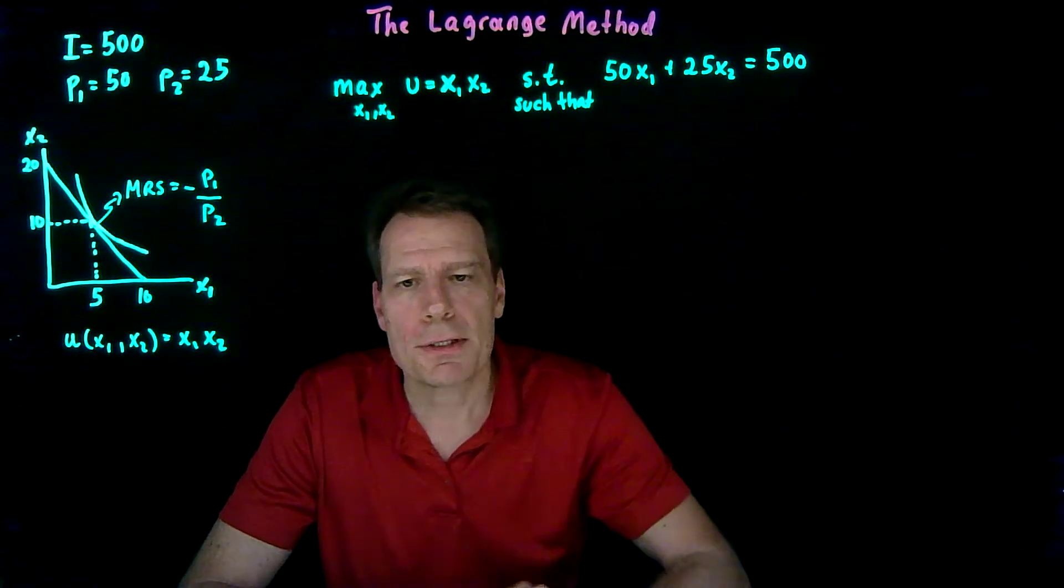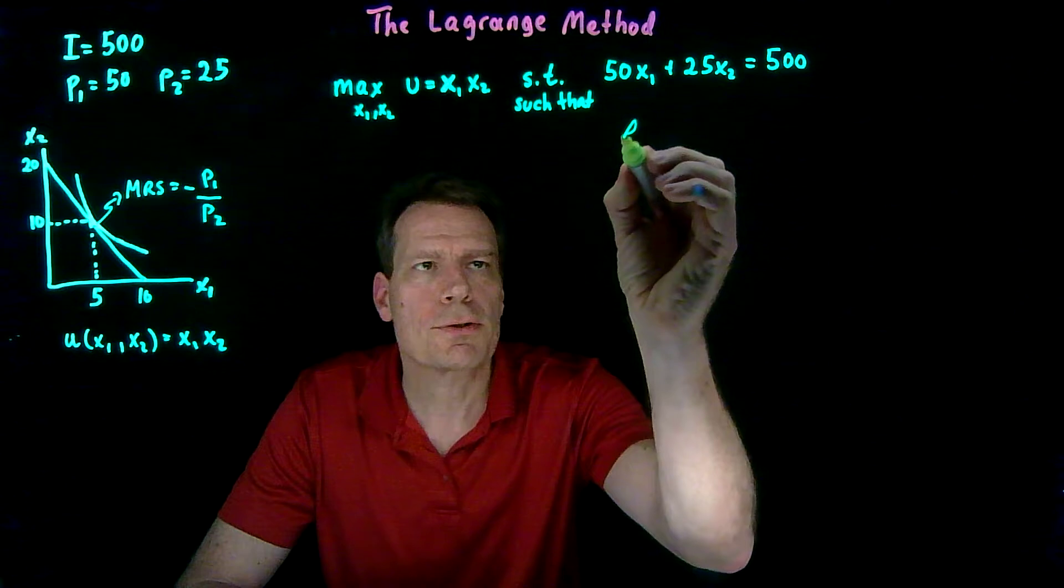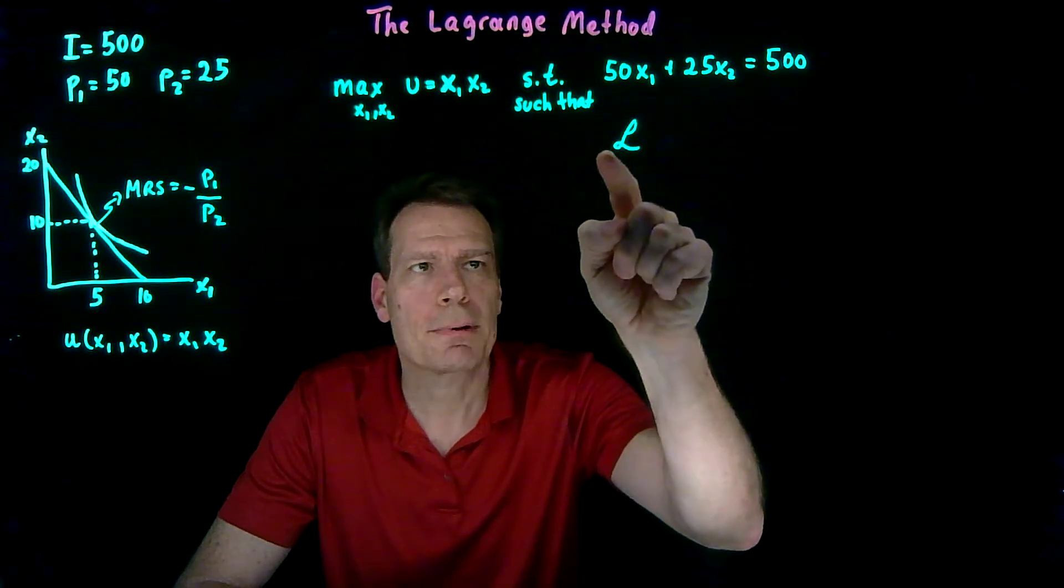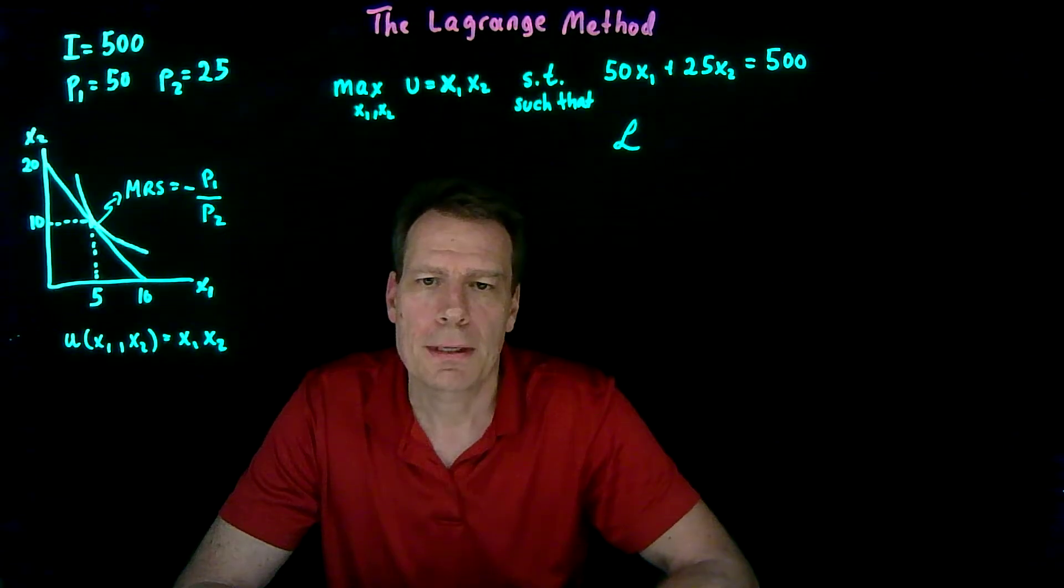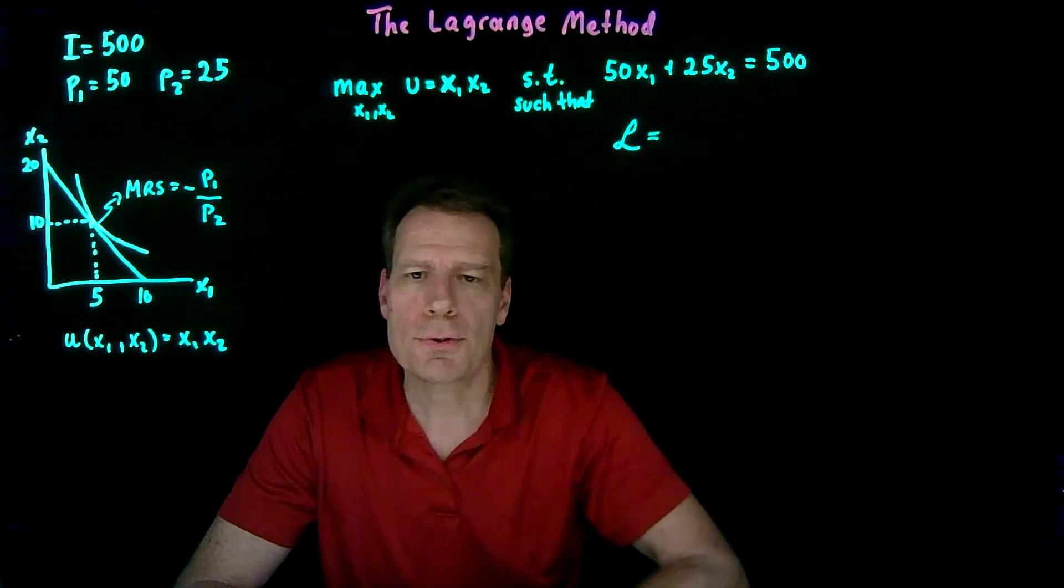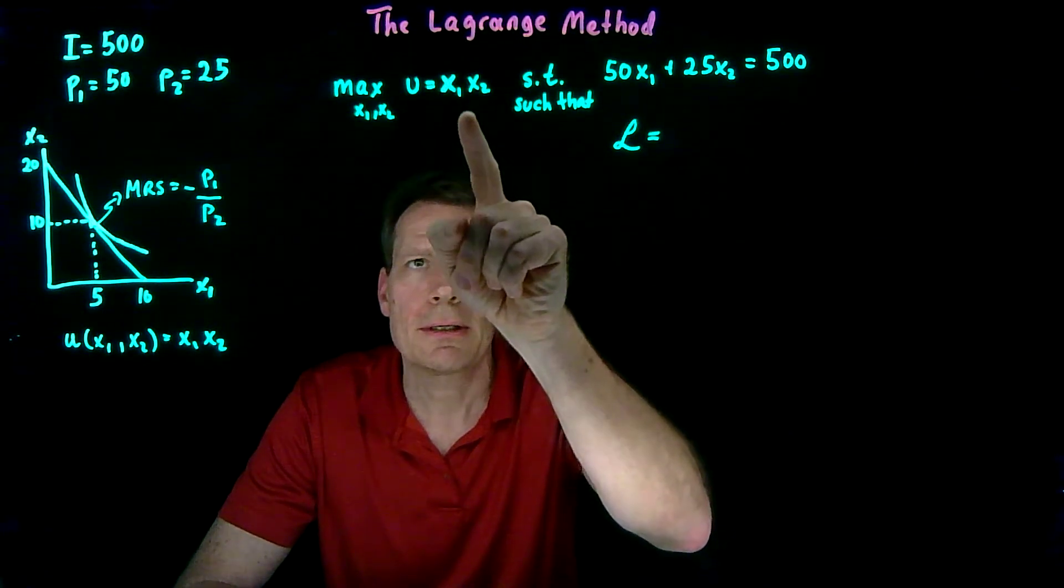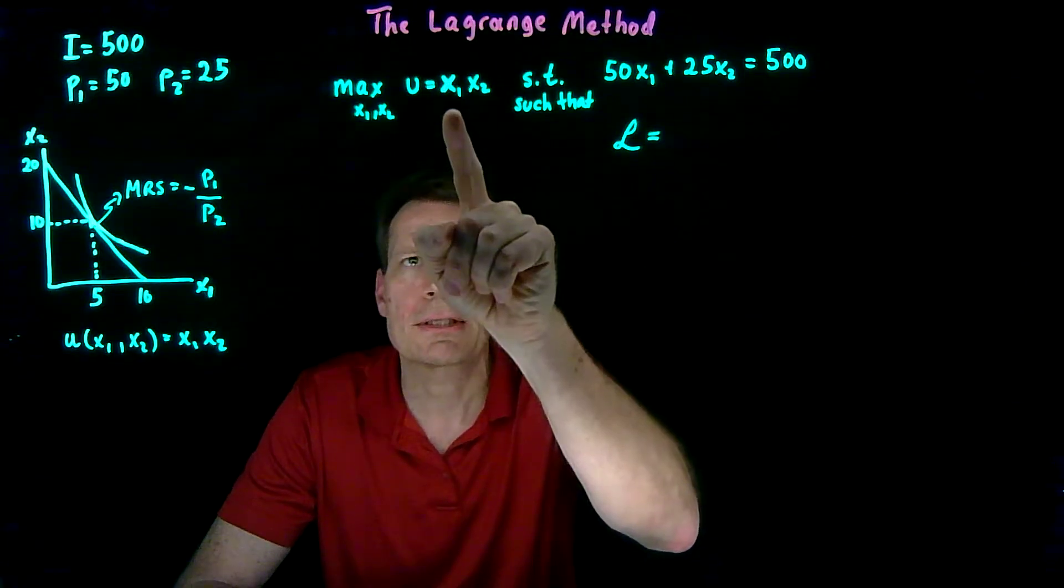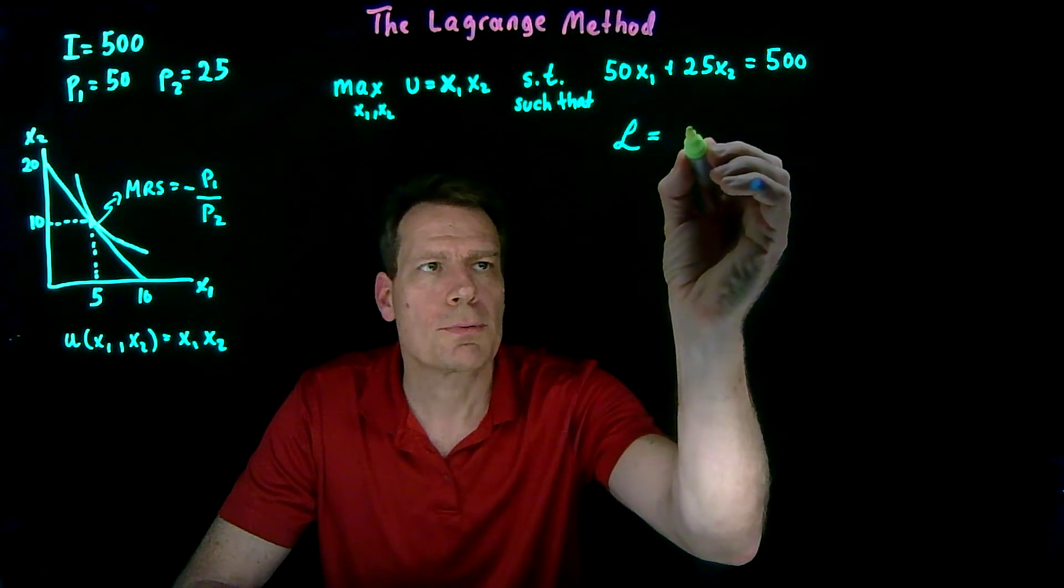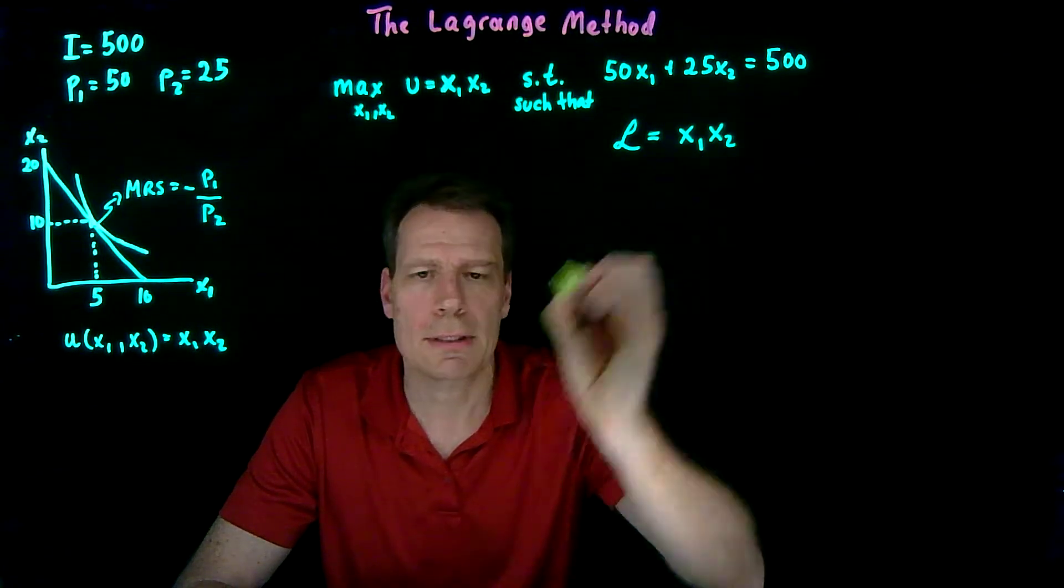But the method starts by creating a new function that's called the Lagrange function, typically denoted by this capital script L. That function has two components. The first one is simply what we're trying to maximize. Here we're trying to maximize utility and in this example utility is given by x1 times x2. So the first part is what we're trying to maximize which is x1 times x2 in our example.